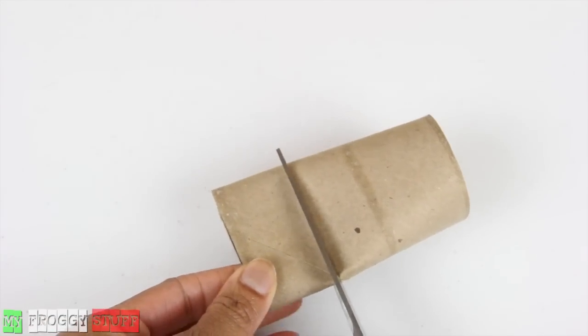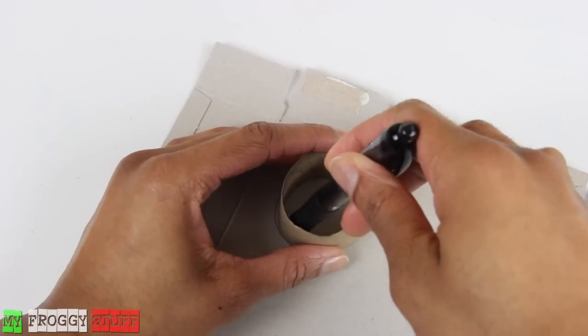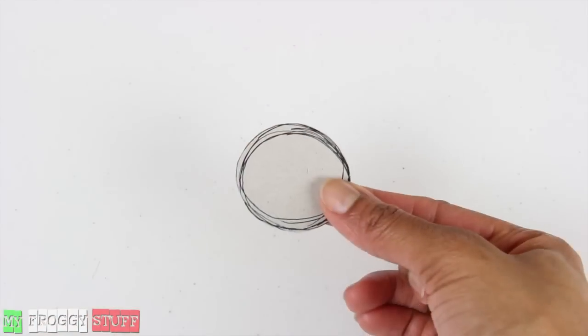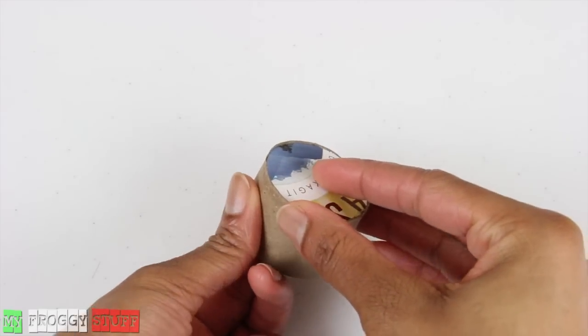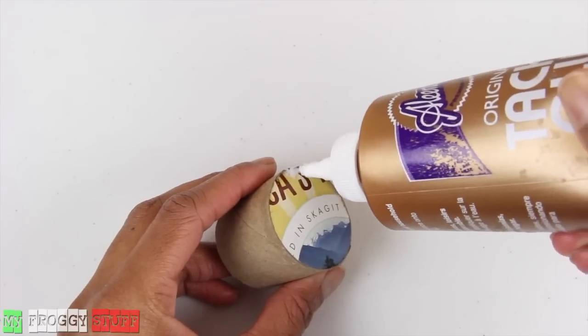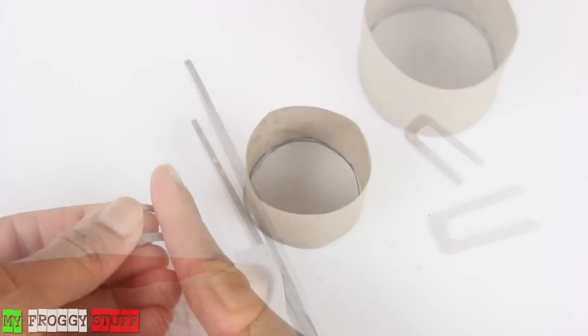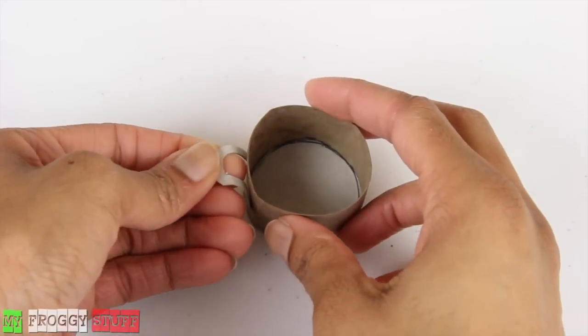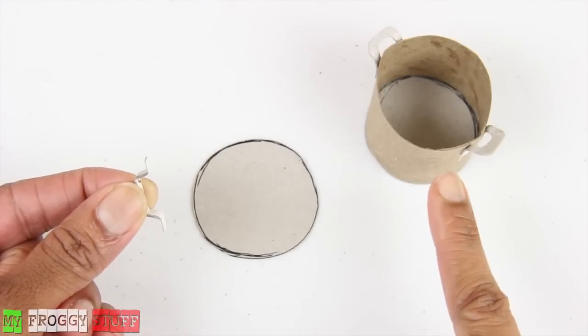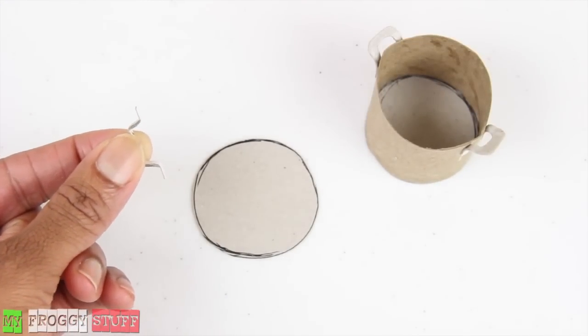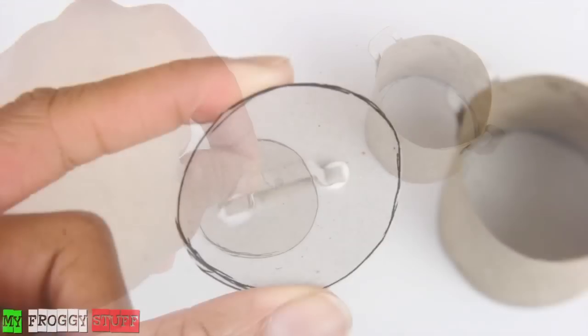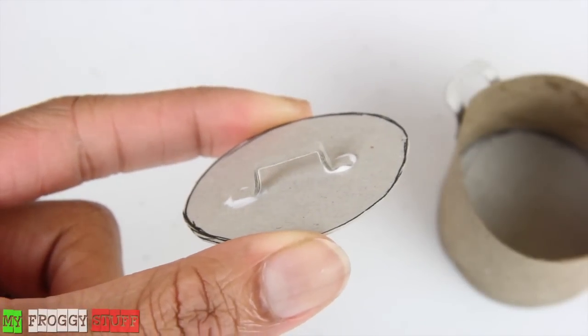Cut the bottom of a toilet paper roll, trace the inside on a cereal box, cut it out, fit it inside the tube, and glue it in place. Cut two U shapes out of the leftover cereal box, bend and glue them to the sides. Cut another circle that is slightly wider than the tube, then cut another piece of the cereal box to glue on top with a bend in the shape of a handle.